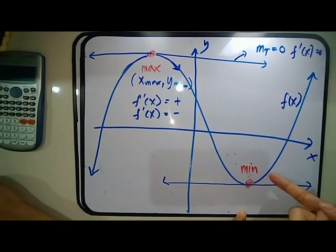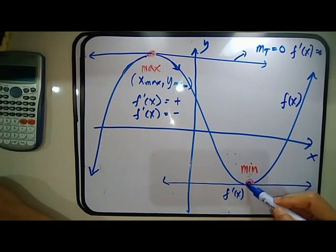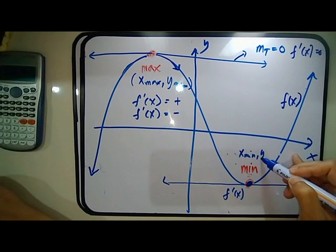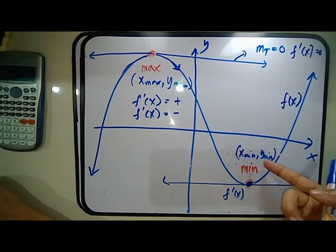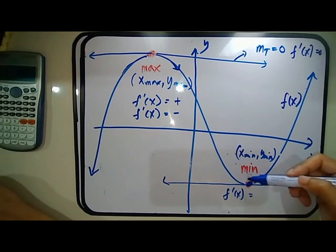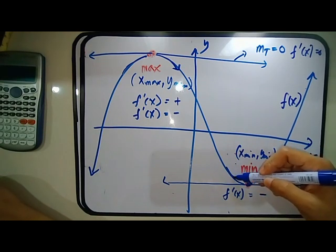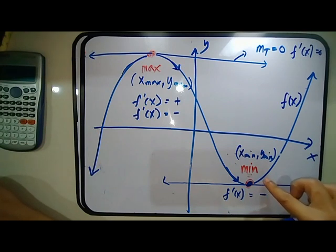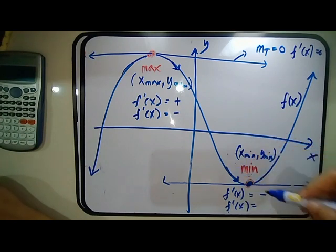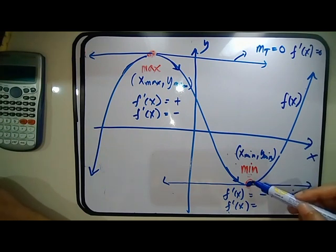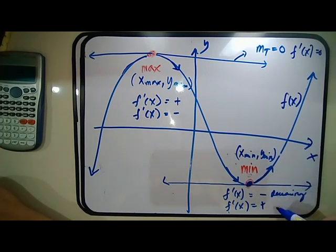For the minimum point at x-min, if you substitute a value less than x-min into f prime of x and it's negative, the graph is decreasing to the left. If you substitute a value greater than x-min and it's positive, the graph is increasing to the right. So a transition from decreasing to increasing confirms you have a minimum point.